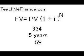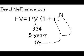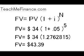Let's do an example. What's the future value of $34 in five years if the interest rate is 5%? You just plug in the numbers: the future value is $34 times 1.05 to the power of 5. 1.05 to the power of 5 equals 1.2762815. Multiply that by $34, and you get a future value of $43.39.